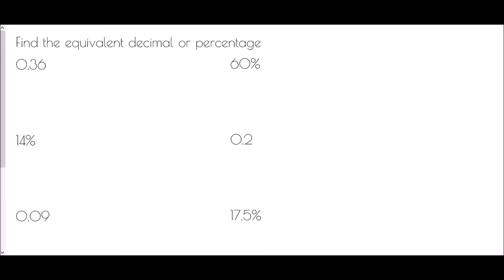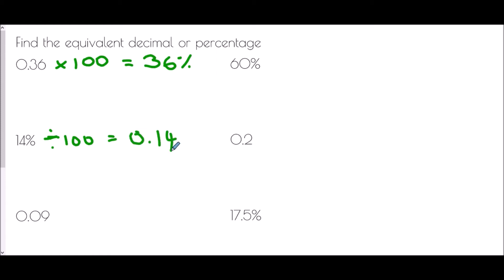To turn 0.36 into a percentage, it's a decimal so multiply by 100 — all digits move two places to the left in place value — giving 36 percent. To turn 14 percent into a decimal, divide by 100 — all digits move two places to the right — giving 0.14. For 0.09 as a percentage: multiply by 100, giving 9 percent.